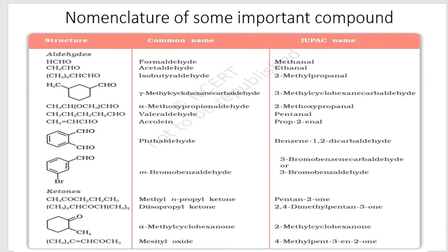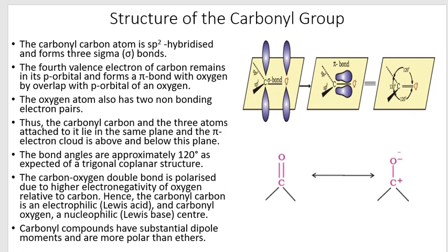Now let us look at the structure of the carbonyl group. The carbonyl carbon in C=O is sp2 hybridized, giving a bond angle of 120 degrees. The three atoms bonded to the carbonyl carbon - two substituents (H or alkyl) and the oxygen - are all in the same plane, making it a planar molecule. Pi electron density is above and below this plane.